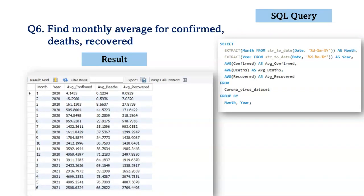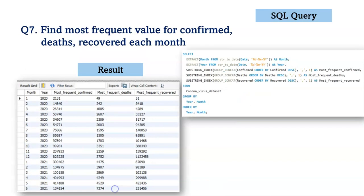Next, we are asked to find the monthly average for confirmed, deaths, and recovered. For this, we use the AVG function for each month of each year. The next question is to find the most frequent value for confirmed, deaths, and recovered each month, using the SUBSTRING_INDEX function, grouped and ordered by a particular month of a particular year.